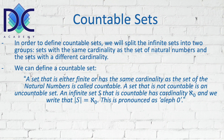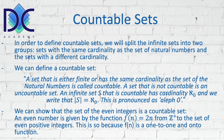We can show that the set of even integers is a countable set. An even number is given by the function f(n) = 2n. This function goes from the positive integers ℤ⁺ to the set of even positive integers, and it is in fact a countable set because there is a one-to-one and onto function between those two sets. The set of even positive integers is given by the relation 2n where n is a positive integer from the domain.